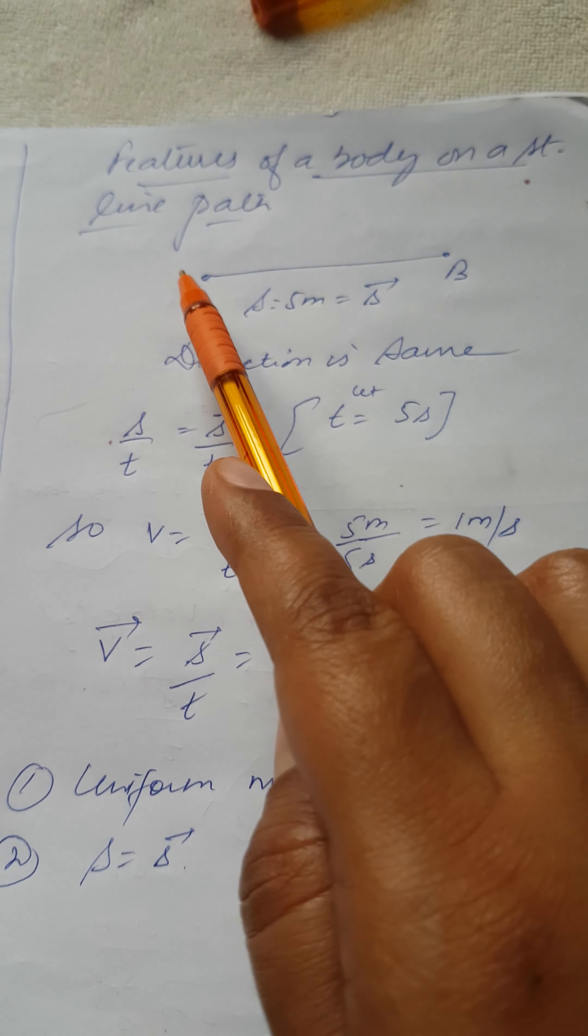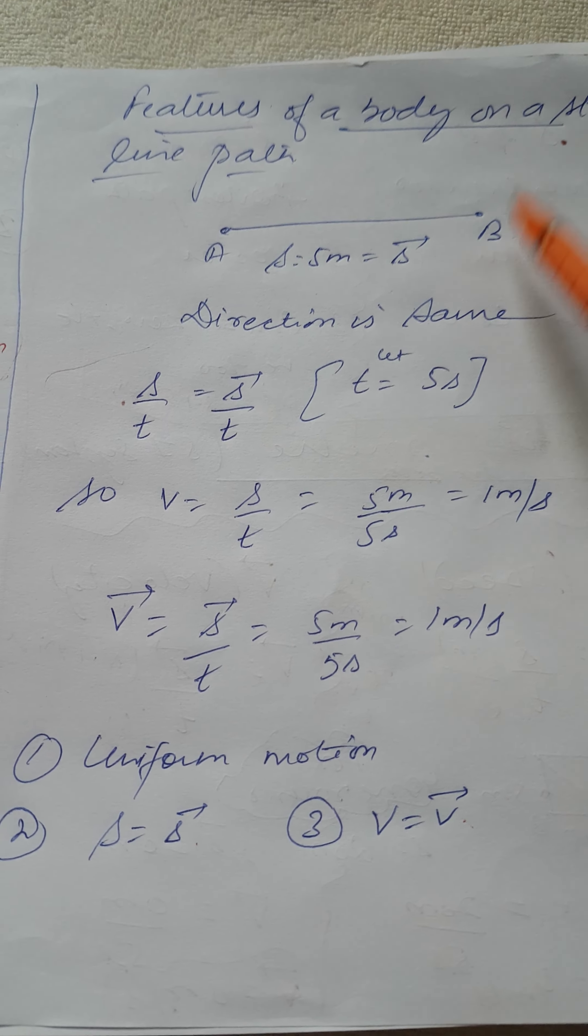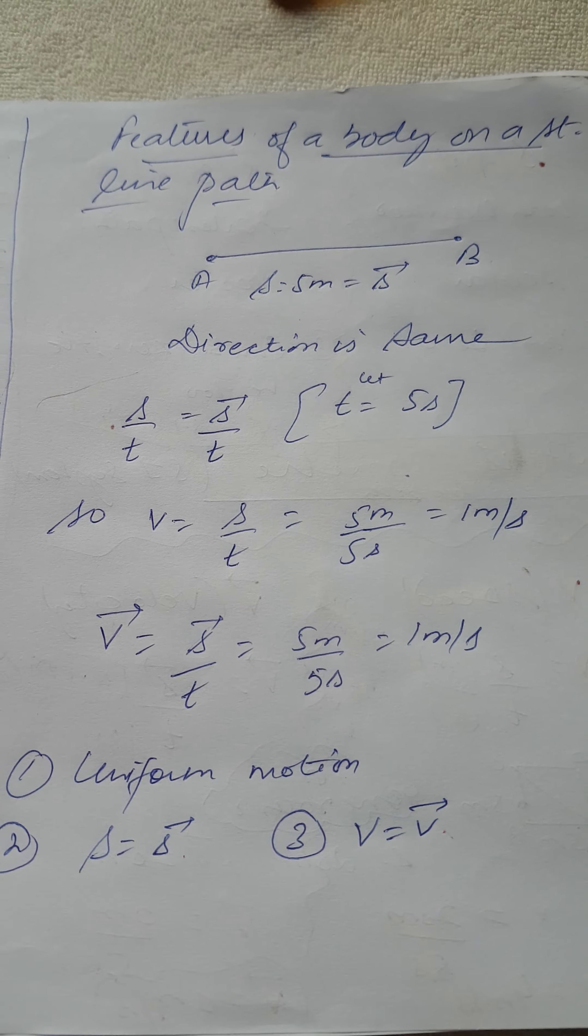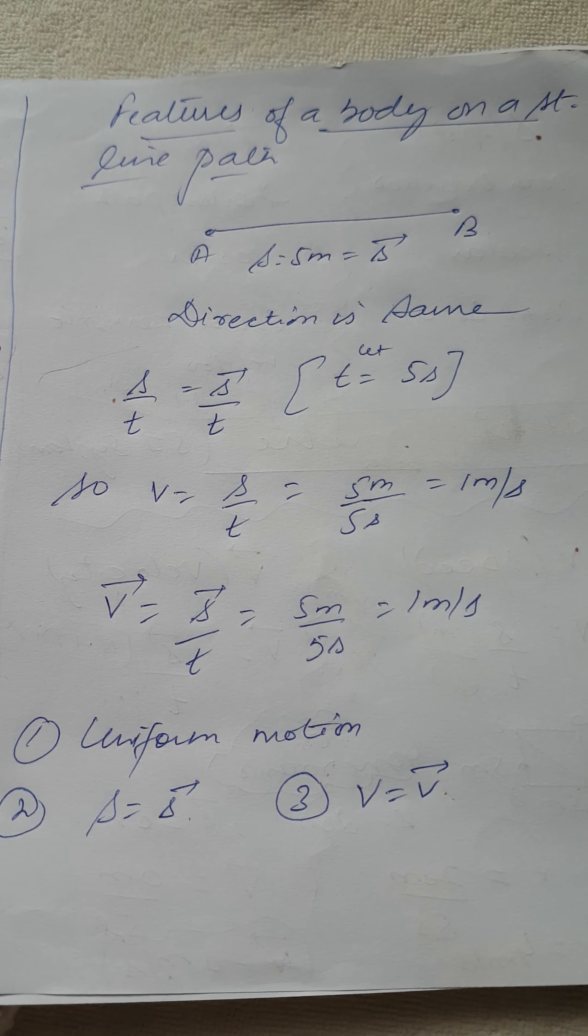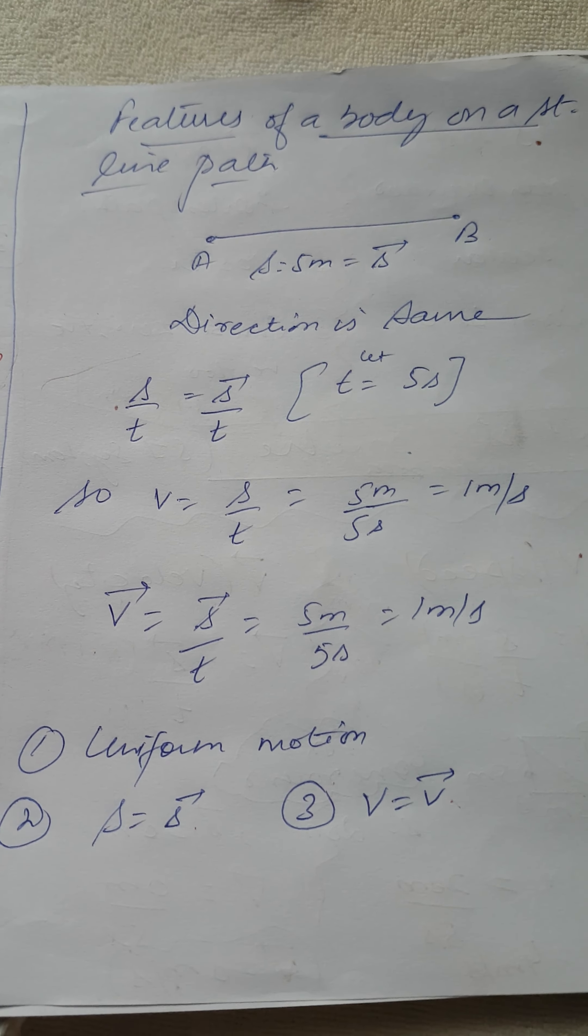Third thing is whenever a body is on a straight line path, it is in uniform motion. So these were the three characteristics of a body whenever it is moving on a straight line path.